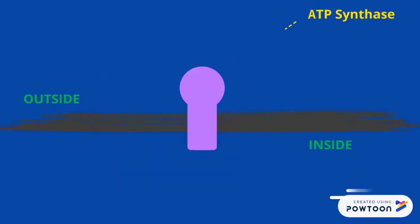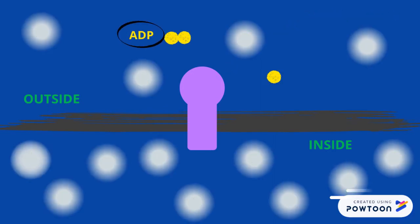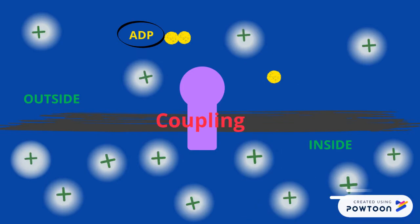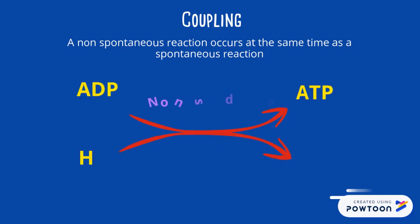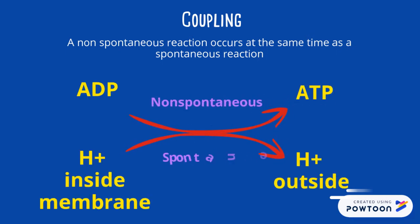Since our cells are smart and great multitaskers, they use a process known as coupling to make ATP without having to do hard work. On the inside of the mitochondria, there are more protons compared to the outside of the membrane. The protons want to keep everything balanced, so some rush to the outside through ATP synthase. During coupling, our cells take advantage of the spontaneous reaction by pairing it with the non-spontaneous reaction.